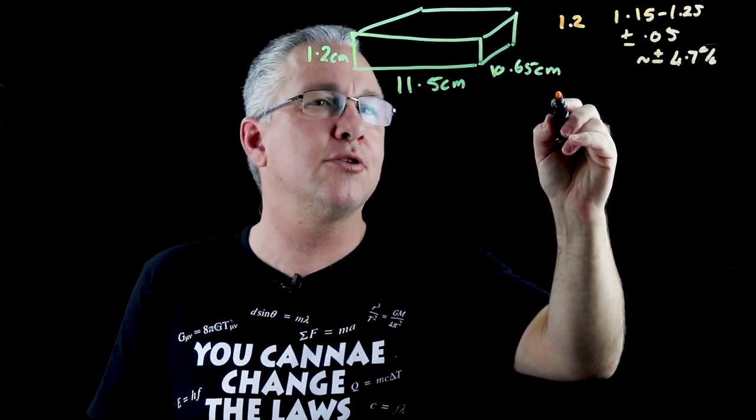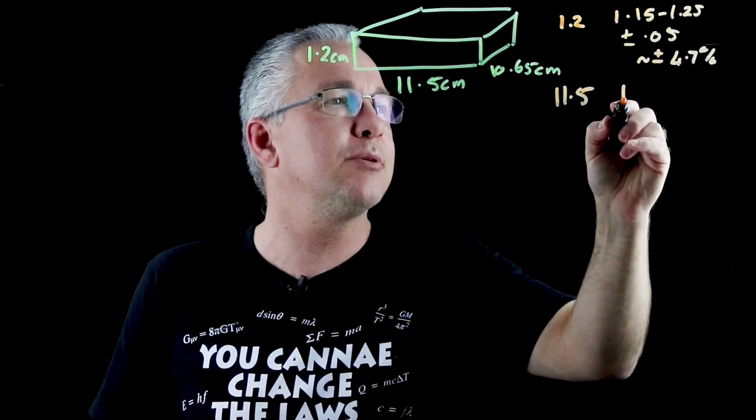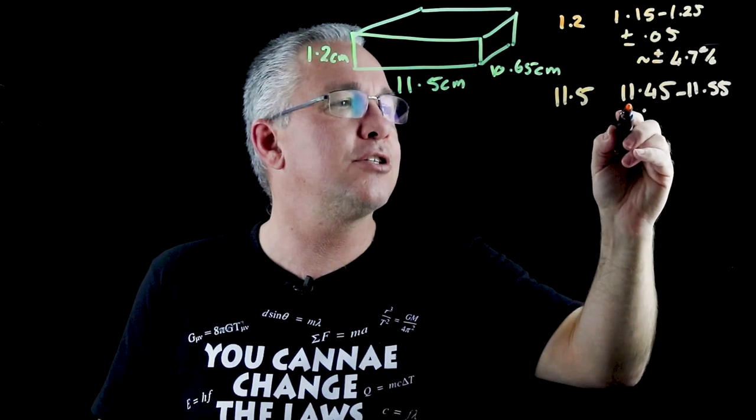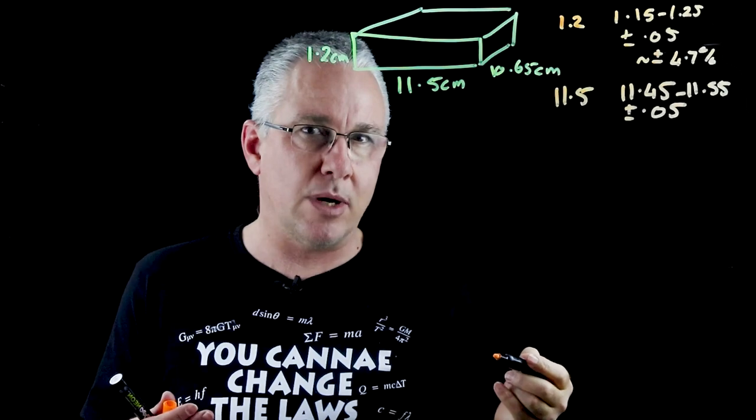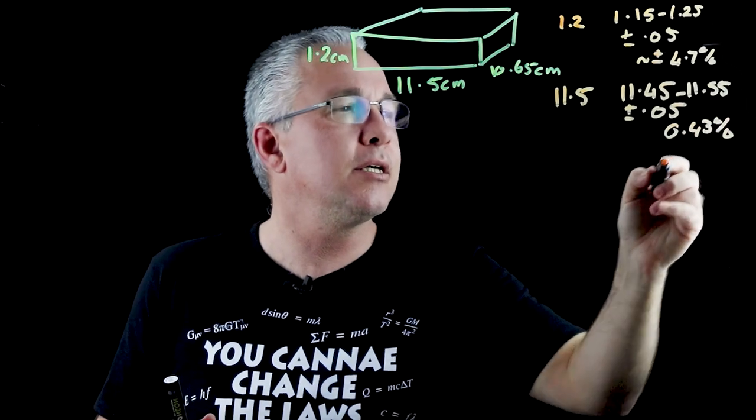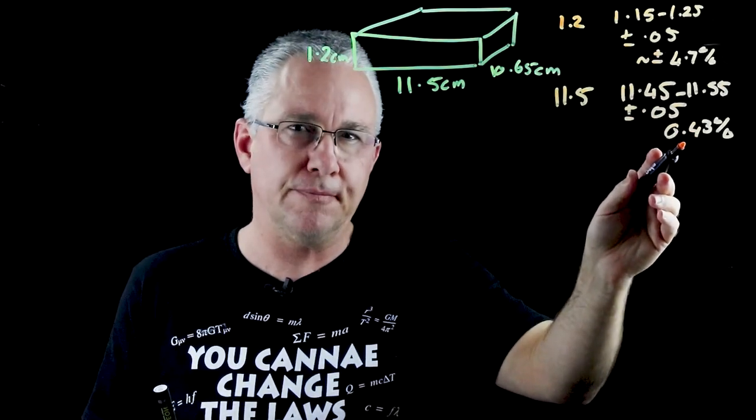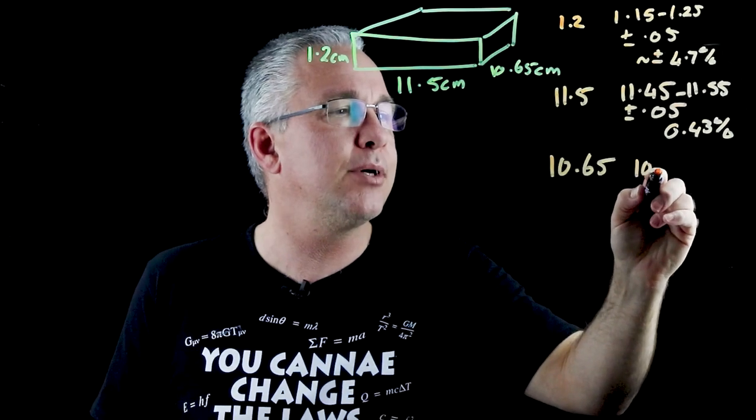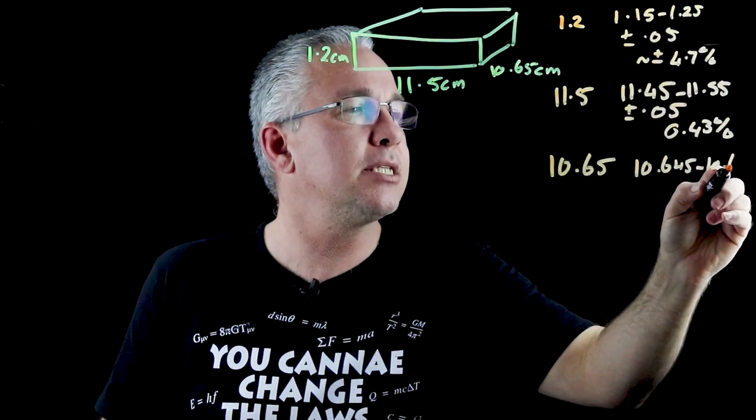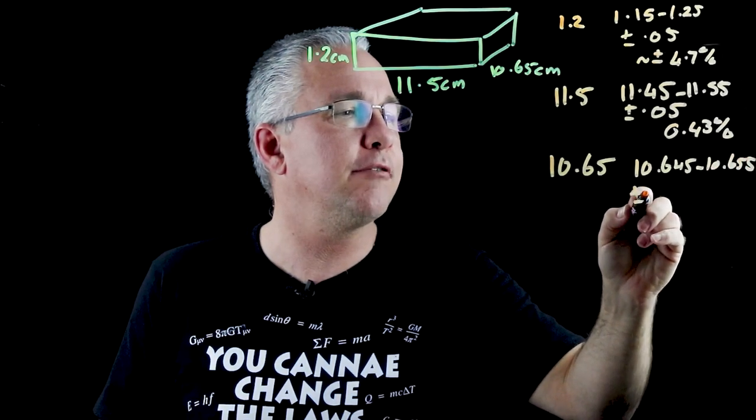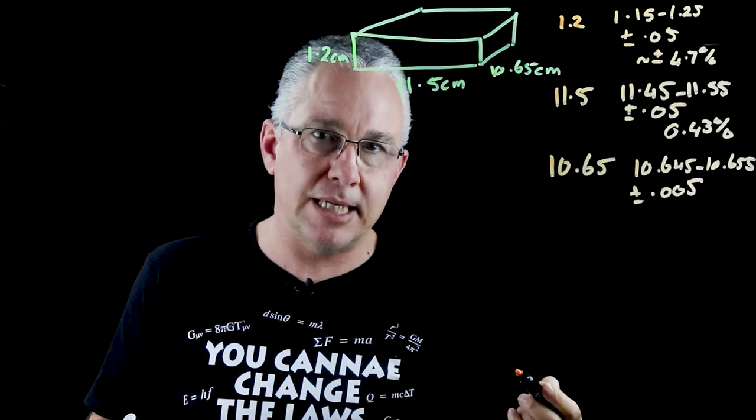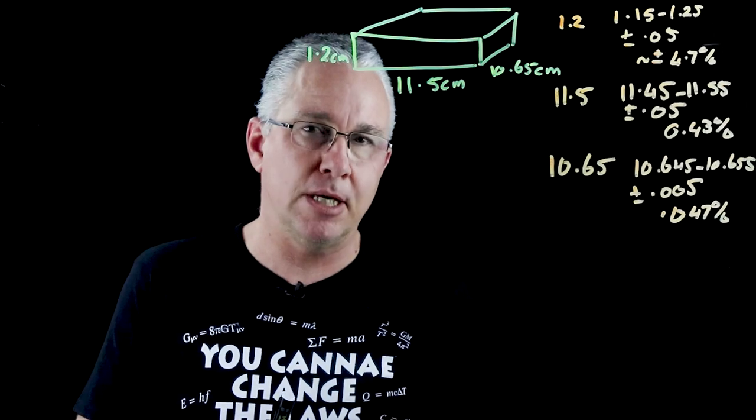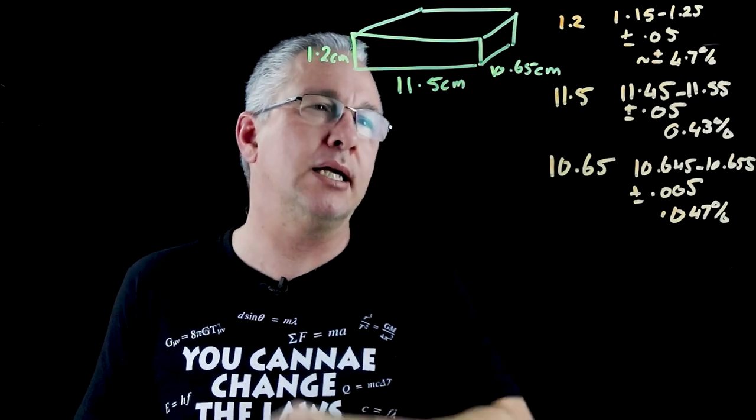Now let's say I also do the same thing for the other two values. So 11.5 in this case, what we're saying is between 11.45 and 11.55, again I have an uncertainty of 0.05 but percentage-wise I'm going to get 0.43 percent. So here you can see automatically that this value, they're more confident. There's a smaller percentage of uncertainty. And then finally we have 10.65 and again the same process applies 10.645 to 10.655 and as a result an uncertainty of plus or minus 0.005. Again the percentage in this case is 0.047 percent. So a much much smaller level of uncertainty. So this is definitely my most precise value. This is my least precise value.